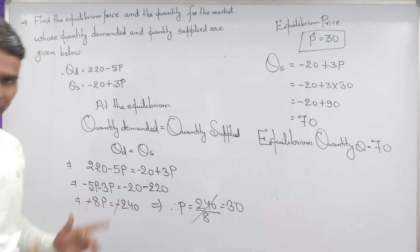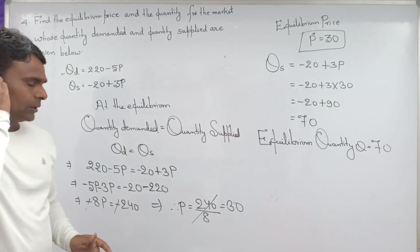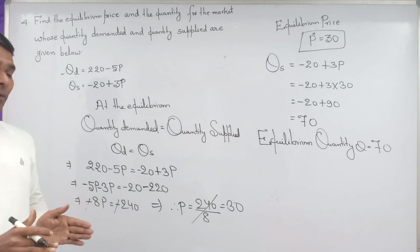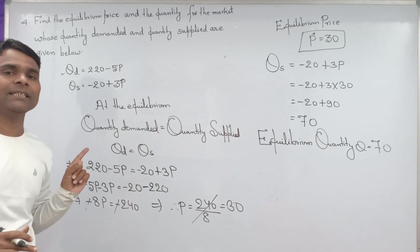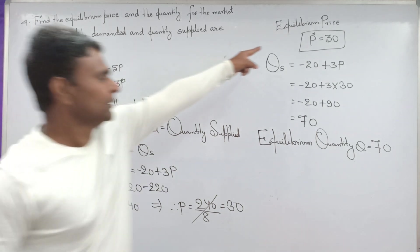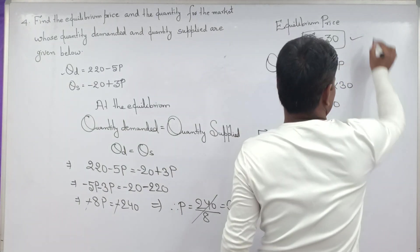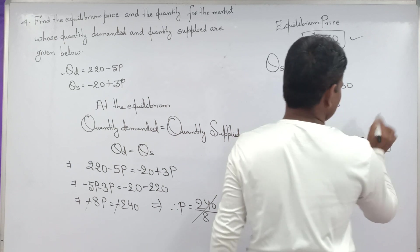Question asked to get two things. One thing is equilibrium price, we got 30, and equilibrium quantity we got 70.